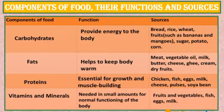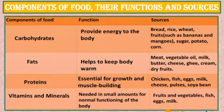The third component you can see in the table is proteins. They are essential, meaning important for growth and muscle building. The sources of proteins are chicken, fish, eggs, milk, cheese, pulses and soya bean.